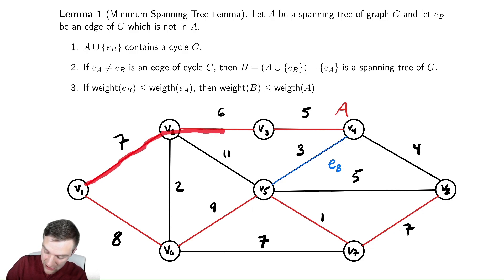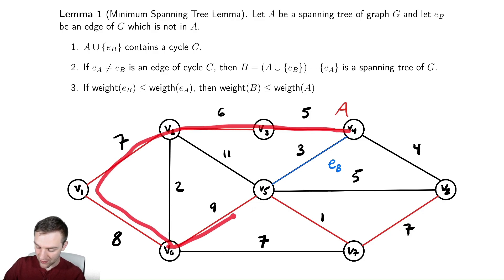That edge there is E sub B, and by adding that in, the first part says that if we consider A and that edge, we union those together, then we have a cycle. So if we look we have the cycle V1, V2, V3, V4, V5, V6, V1, we generate a cycle. That will always happen. Why does that always happen? It always happens because for it to be a tree, A must have been a connected graph, and by adding in another edge, we take the existing path from V4 to V6 to V5, and then we add another edge that therefore must create a cycle.